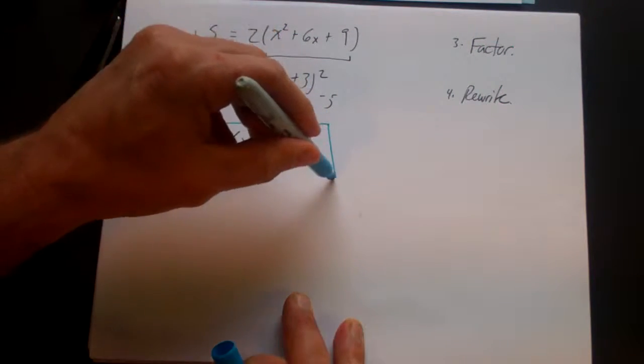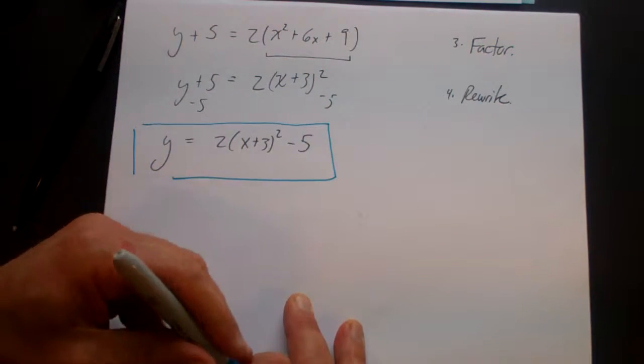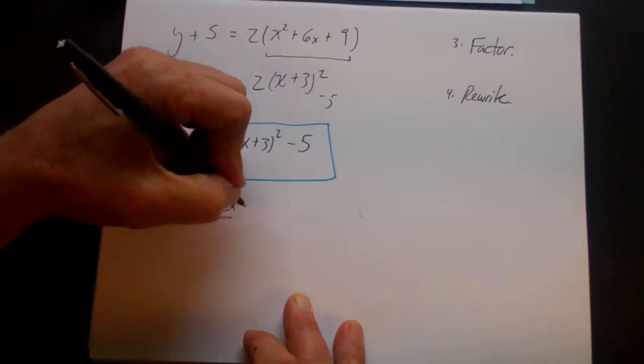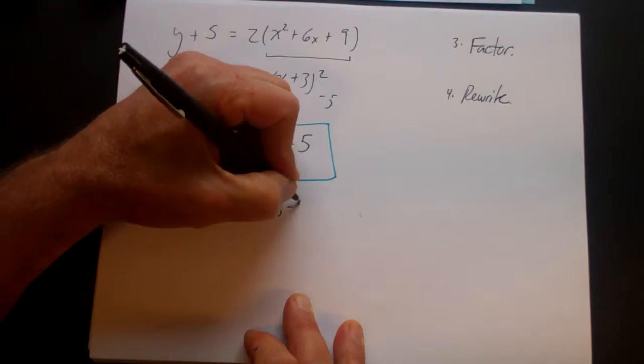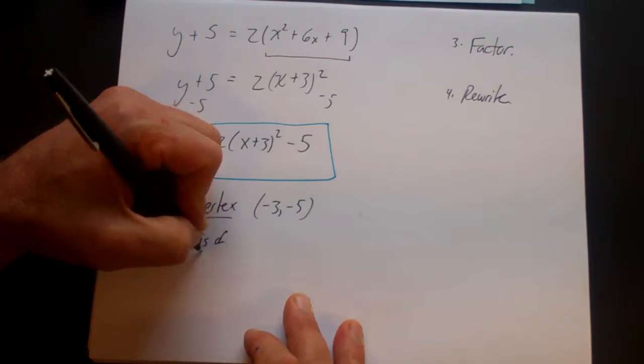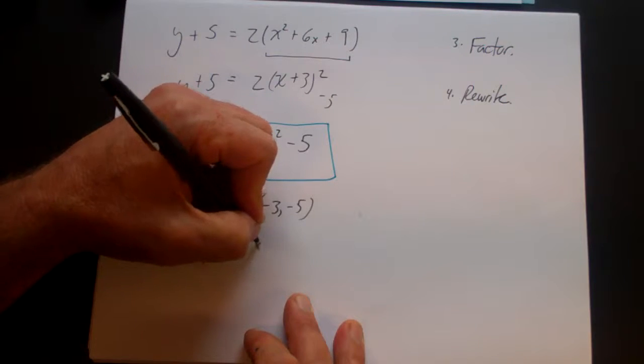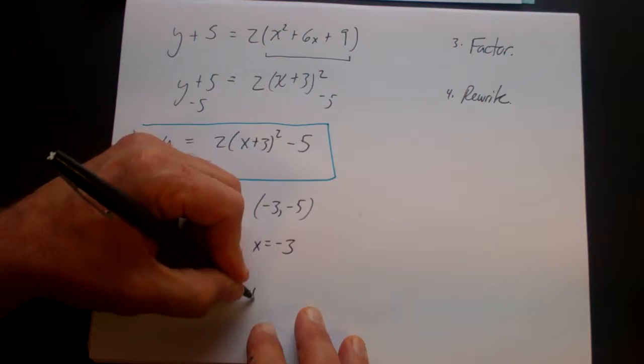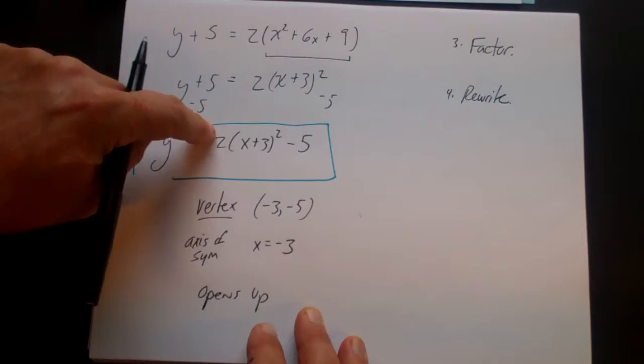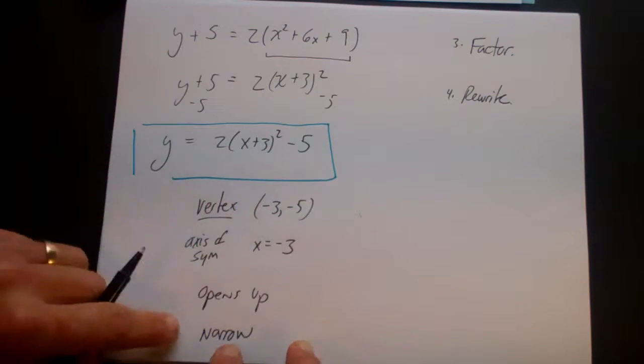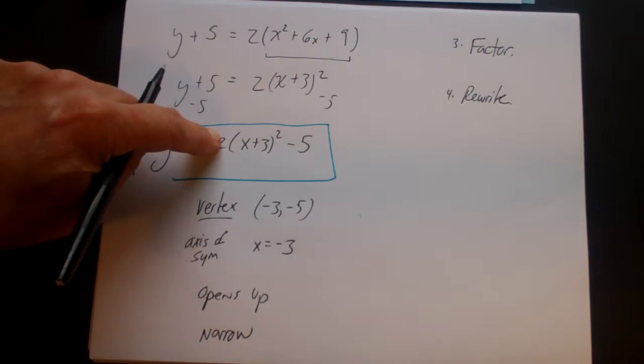Let's put a box around that. And we can look at that. We can look at why we did that. We know the vertex, negative 3, negative 5. We know the axis of symmetry, x equals negative 3. We know it opens up. We know it opens up because the a is positive. And we know it's relatively narrow, at least relative to x squared, because the absolute value of a is greater than 1.